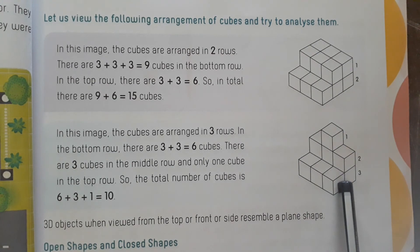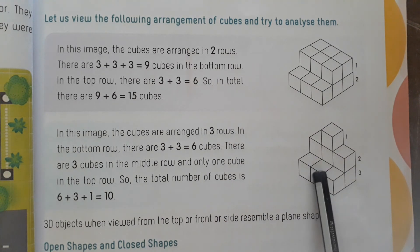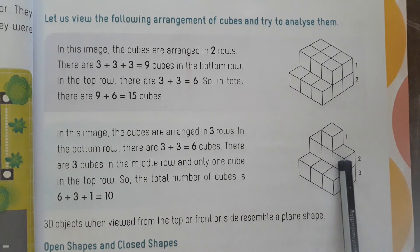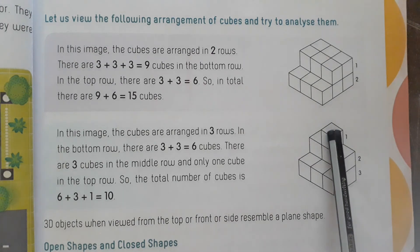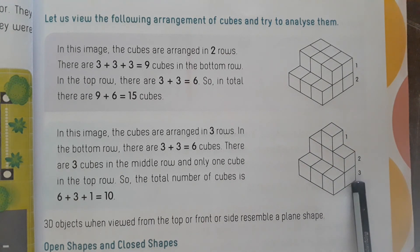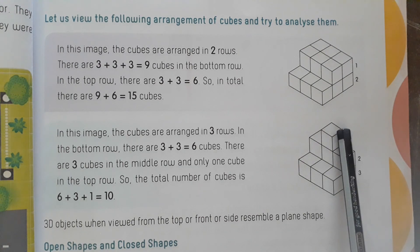Second image. In this image the cubes are arranged in three rows. In the bottom row there are 6 cubes. In the middle row there are 3 cubes. In the top row there is only 1 cube. So totally: 6 plus 3 equals 9, plus 1 equals 10 cubes in total. Okay, children?